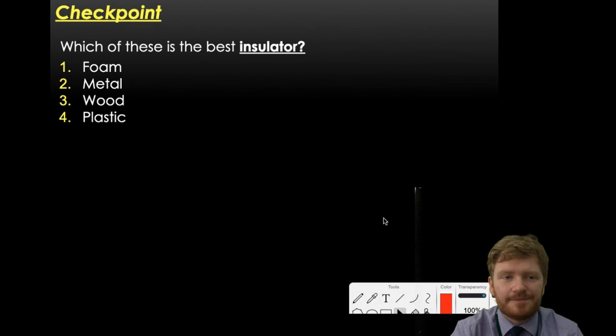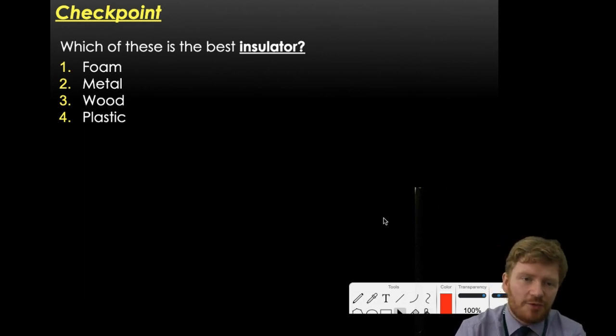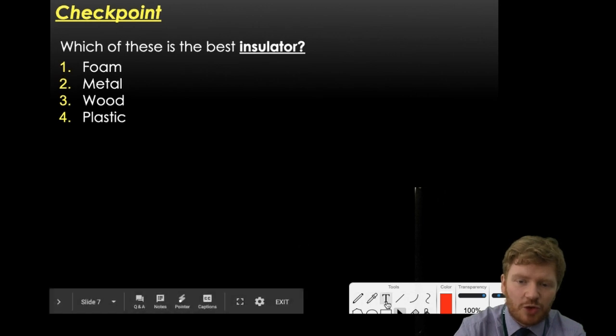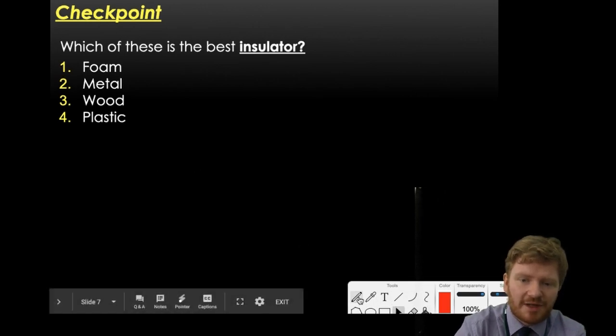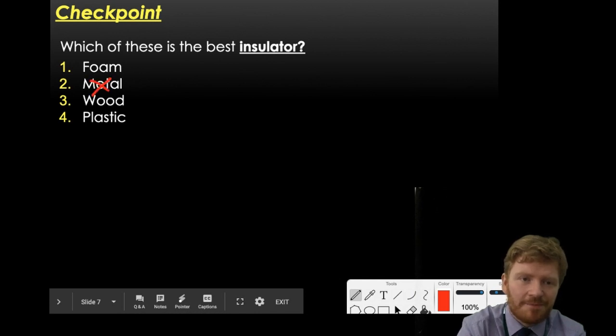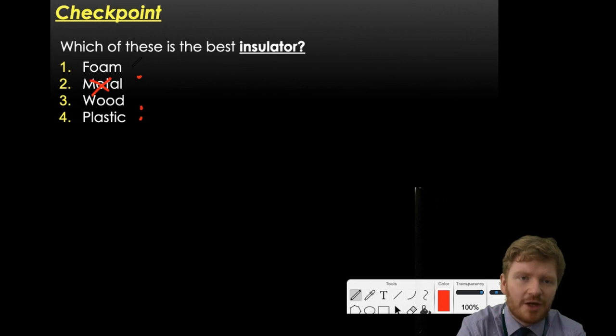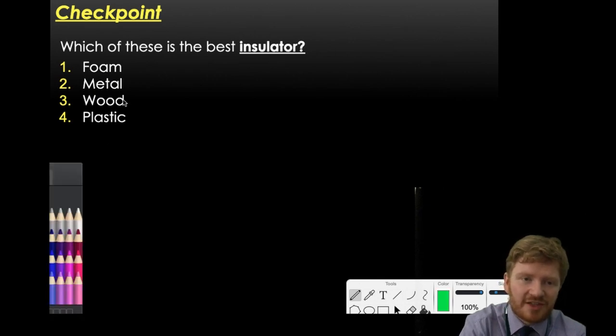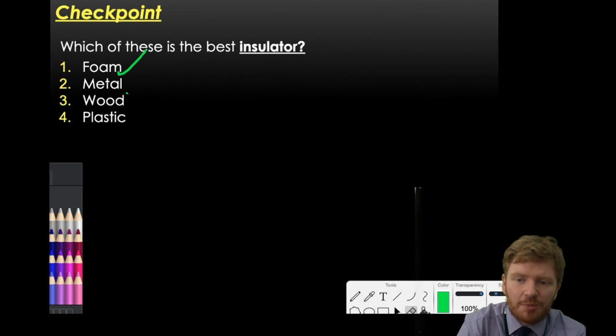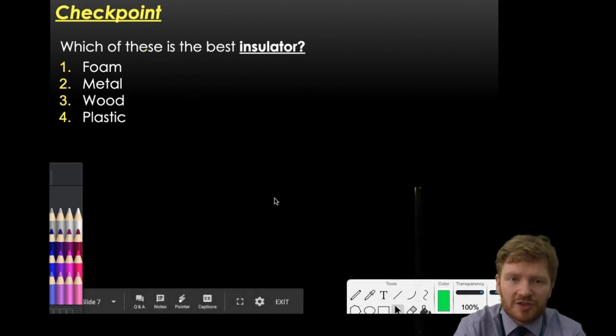Which of these is the best insulator? We've got three different materials there. Hopefully you realize that it's definitely not going to be metal because metal is a really good conductor, so it can't be that one. So it's between foam, wood, or plastic. Well, foam has lots and lots of air pockets in it and we know that air is a super bad conductor. So foam will be the best insulator or the worst conductor. It means the same thing. But hopefully you also realized that wood and plastic are also going to be pretty bad conductors as well, so good insulators too.